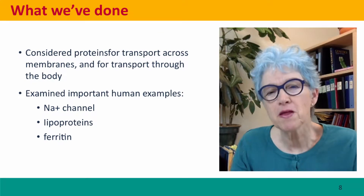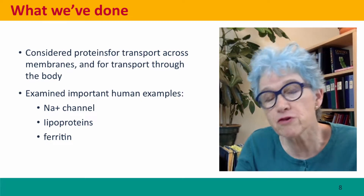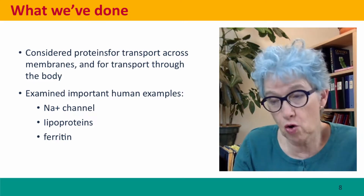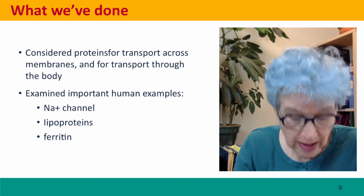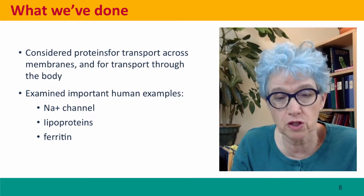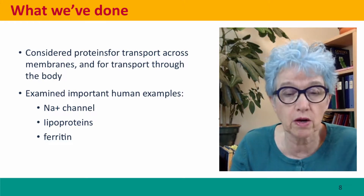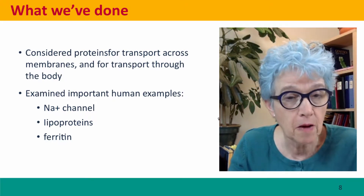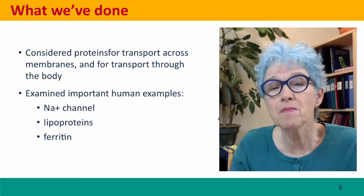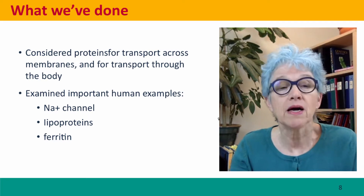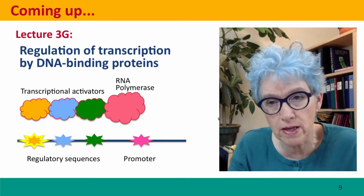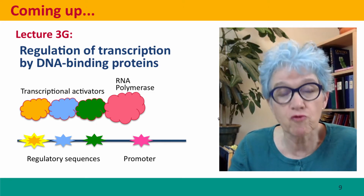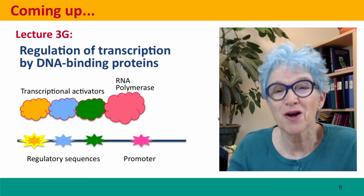So what have we covered? We talked about proteins needed for transport across membranes and for transport through the body. We considered the example of sodium channels, which transmit nerve signals and are almost always gated — open in response to particular signals, closed in response to others. Lipoproteins and ferritin carry important molecules in our blood, making sure they get to the right destination and keeping them away from the wrong ones. Coming up next, we'll start thinking about regulatory proteins, beginning with the DNA binding proteins that regulate transcription, which is vitally important for controlling all the functions of our cells.